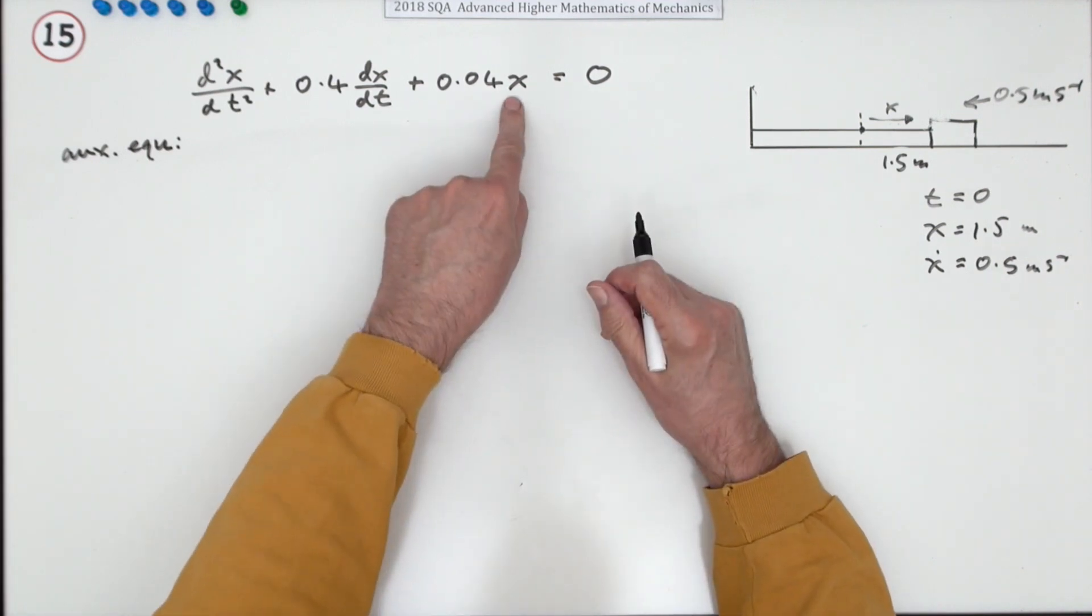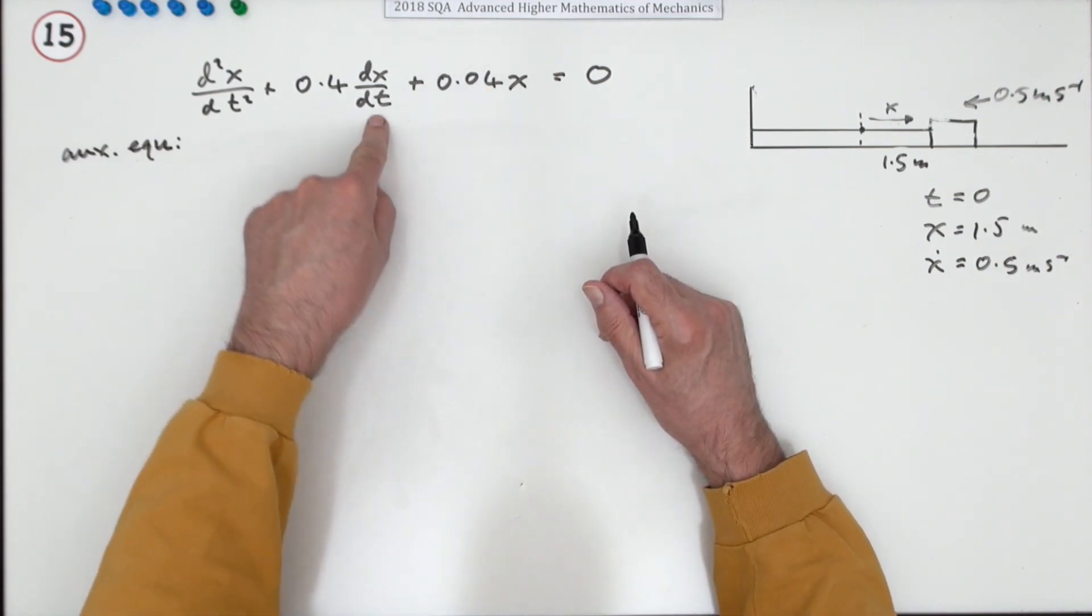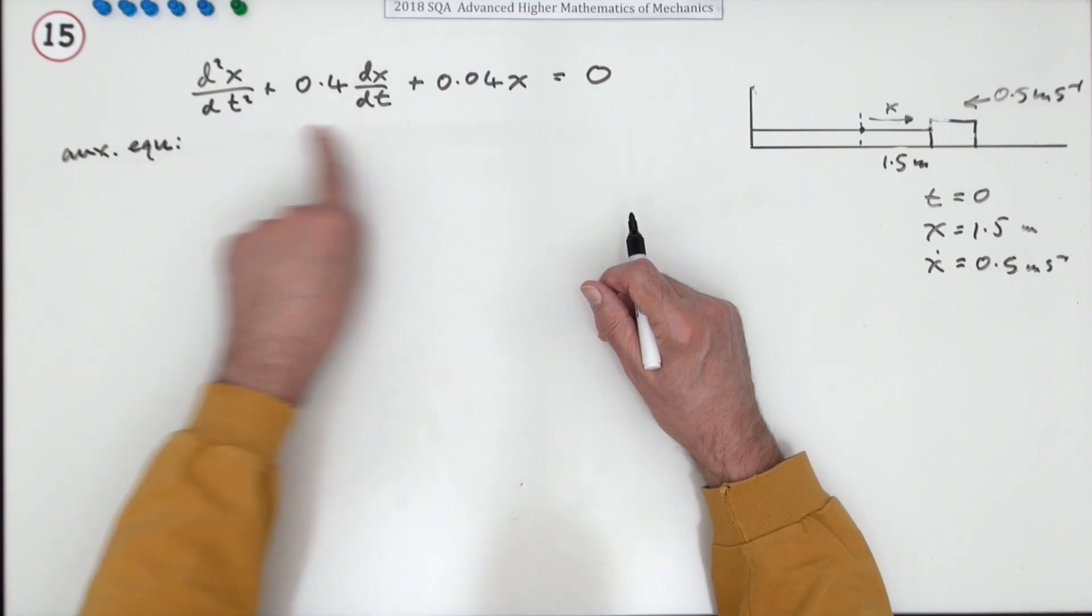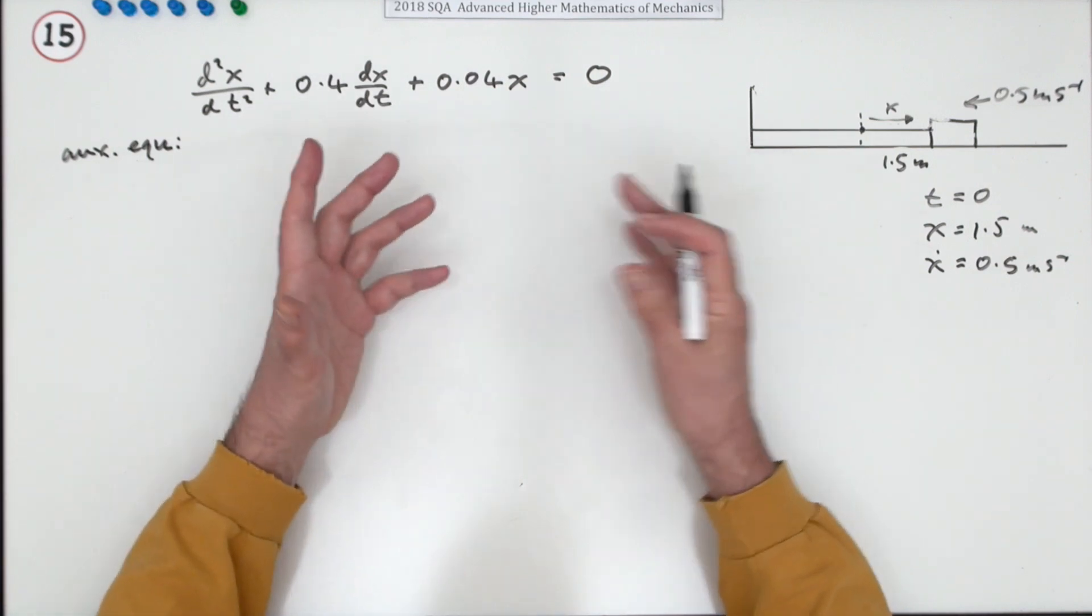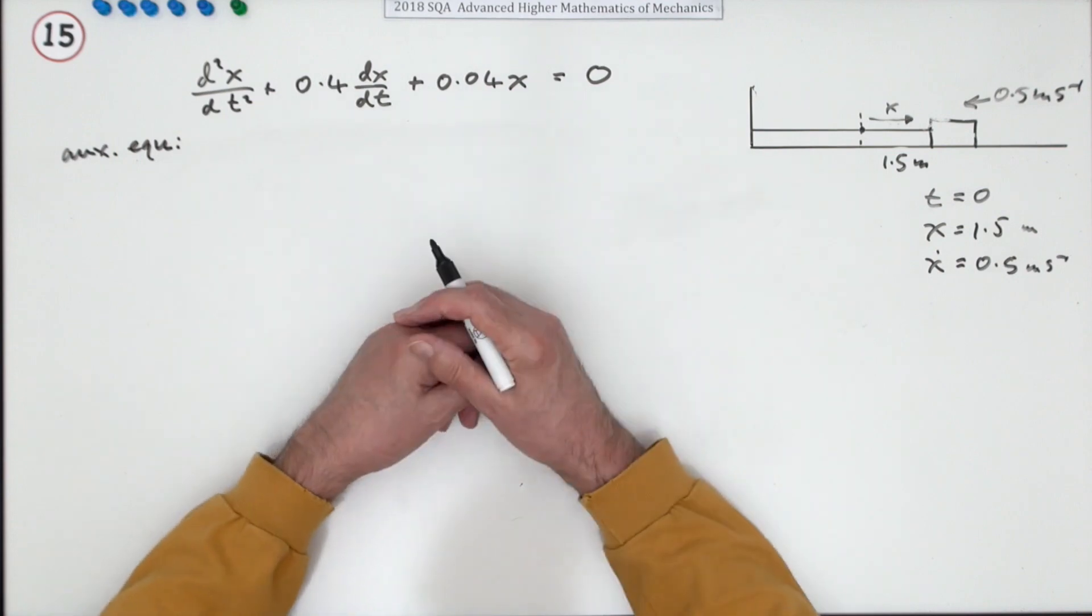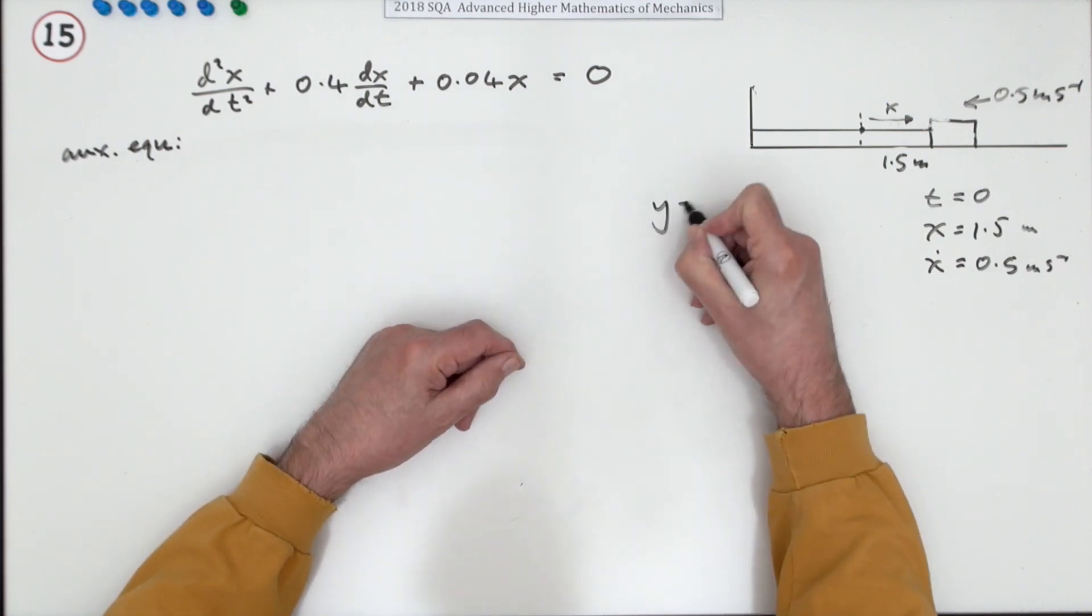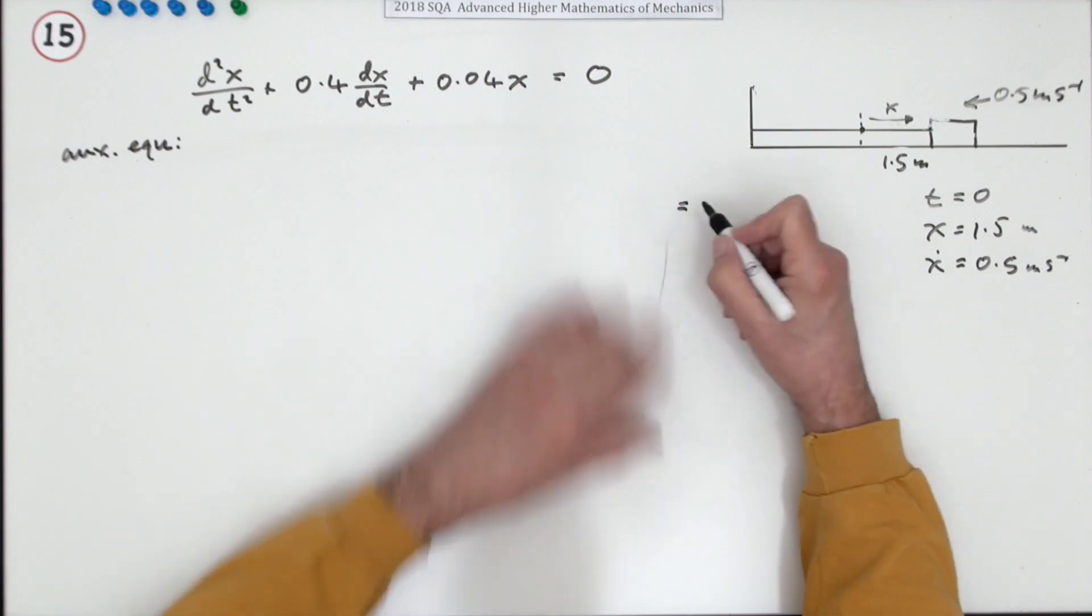Because if you've got some function and its derivative and its second derivative all coming to zero, that function must be something that essentially doesn't change. And the prime candidate for that would be x equals e to the something, so we'll just put mt.